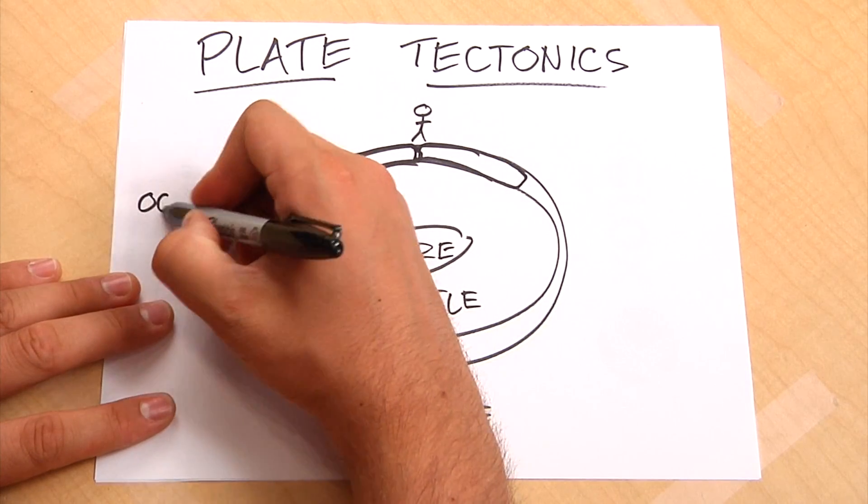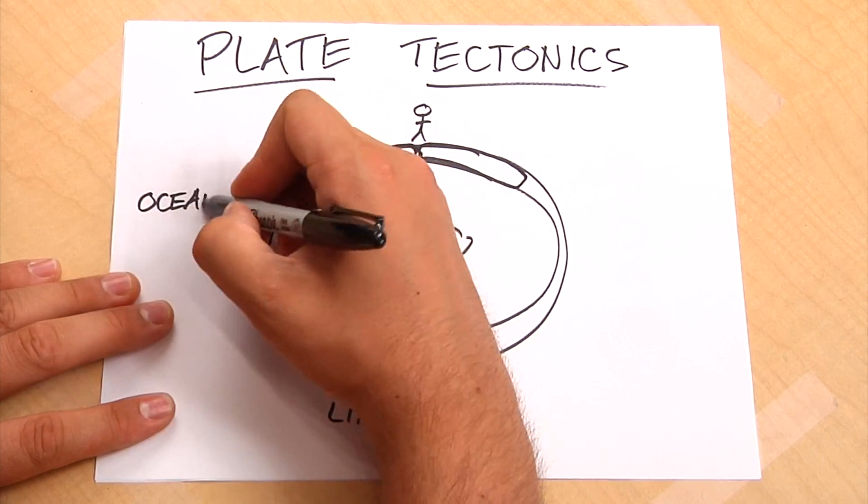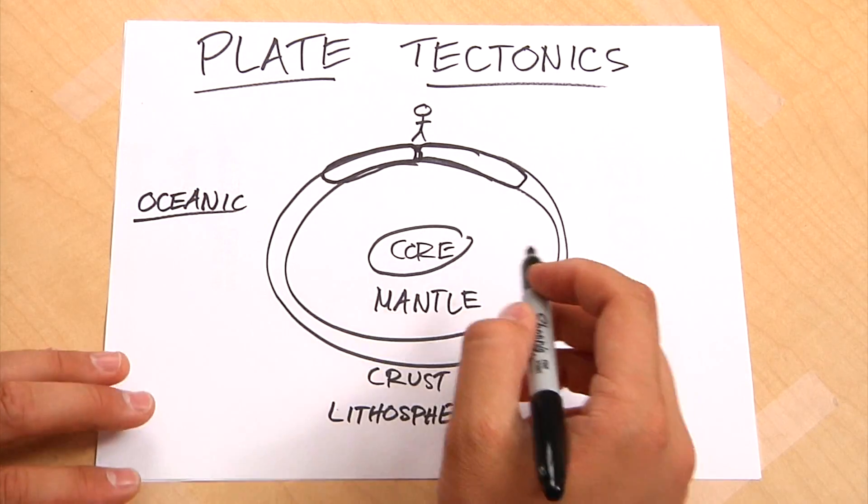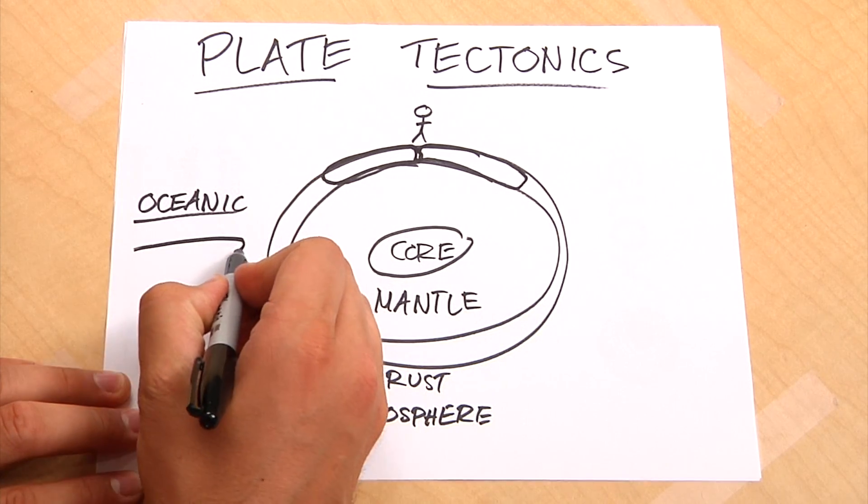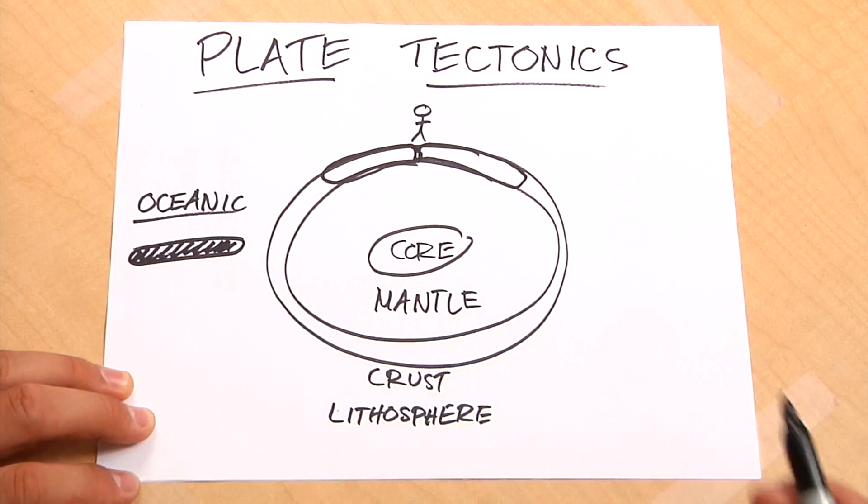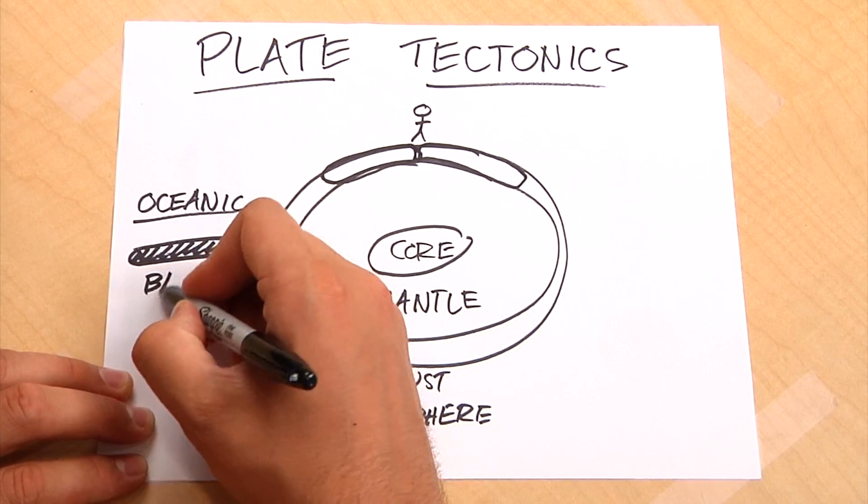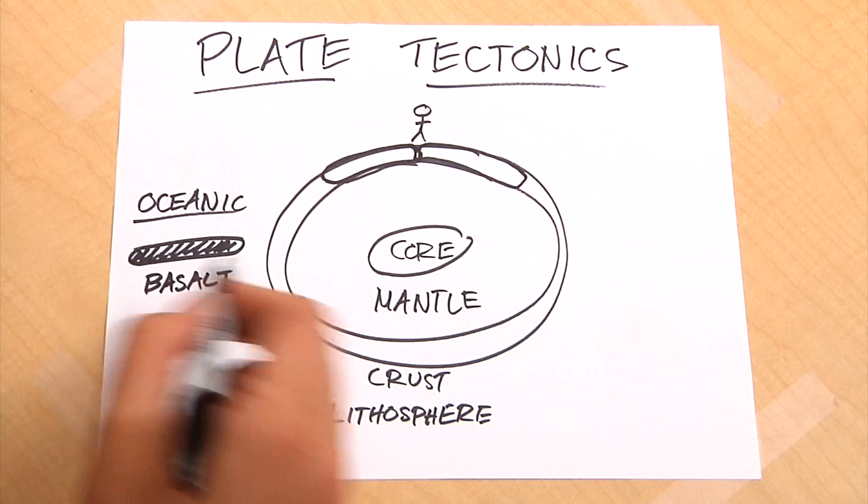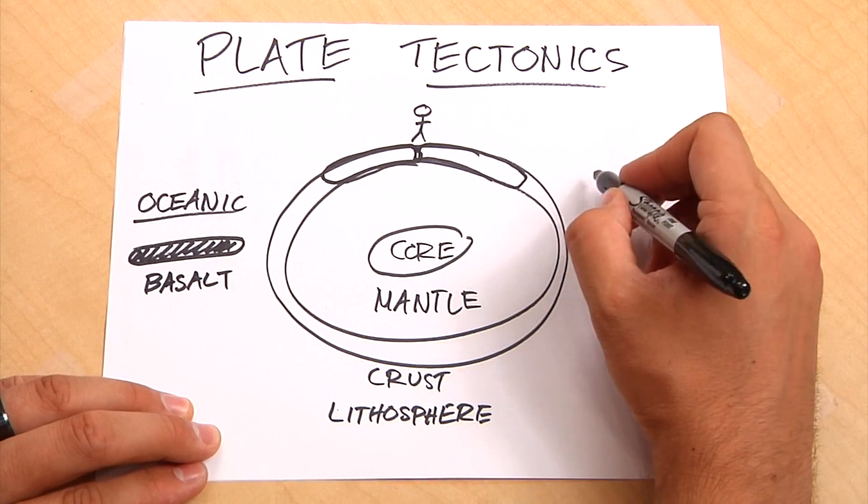So the first kind is oceanic. Oceanic plates are, it's easy to remember because they're under the ocean. They're usually covered with water. They are relatively thin and dark. It's actually a very dark black rock, generally made of a rock called basalt. So thin, heavy, dark rock.